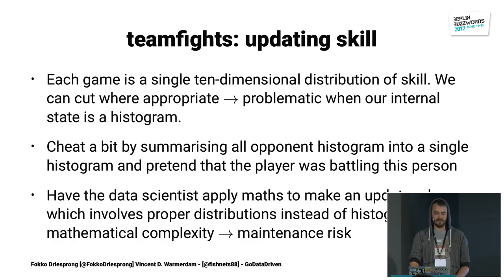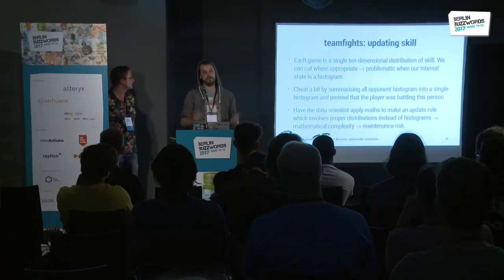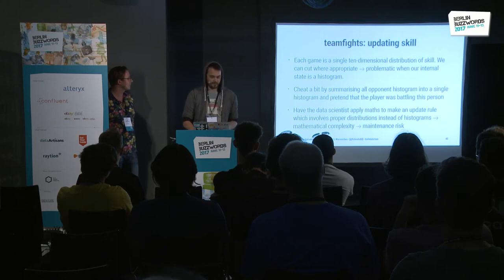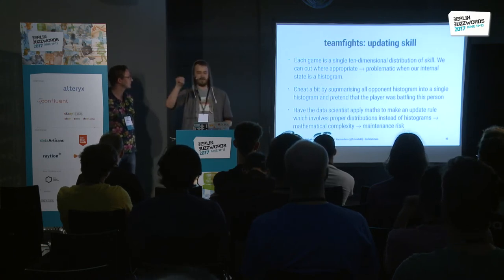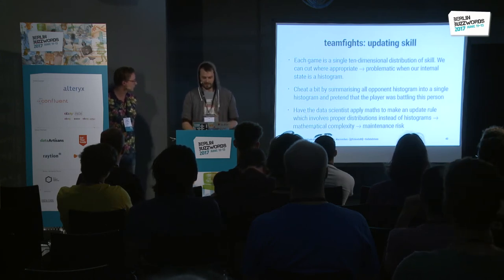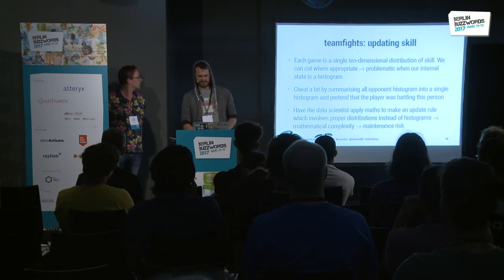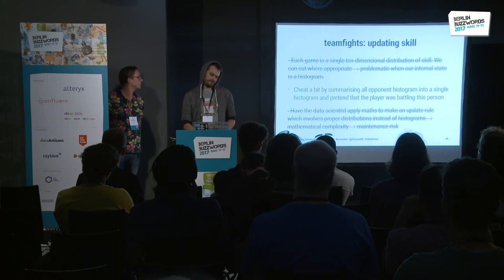The harder part is: we know how to map skill to a bucket, we know how to map the queue bucket to a team, and then the hard part is how to have a team fight and have everything update. The blunt approach: before we had a two-dimensional distribution of two histograms; if ten people play, it's just a ten-dimensional distribution. But if the histogram has a hundred buckets and you take that to the power of ten, basically your computer will say no. Alternatively, you could summarize the team somehow, or have a data scientist apply heavy math for a consistent update rule — but that leads to maintenance risk. So we figured heuristics might be the best solution.